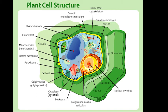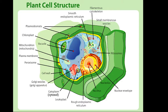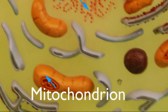Vacuoles store cell sap or solution in plant cells and temporarily store variable substances in animal cells. The mitochondrion produces energy to power the cell through the process of cellular respiration. Lysosomes — from the word lysis, meaning to break apart, and soma, meaning body — engage in intracellular digestion and clean up cellular debris.